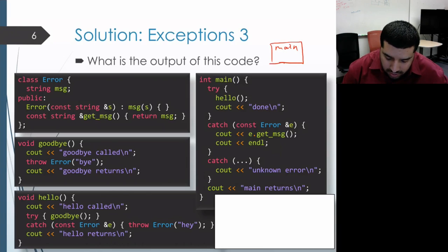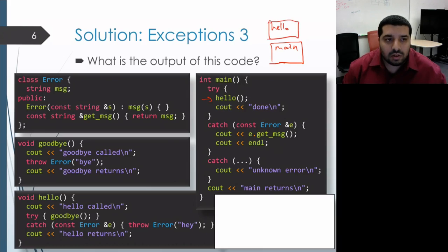And the first thing that main does is it enters into the try block and makes a call to the hello function, so we get an activation record for hello on our call stack.